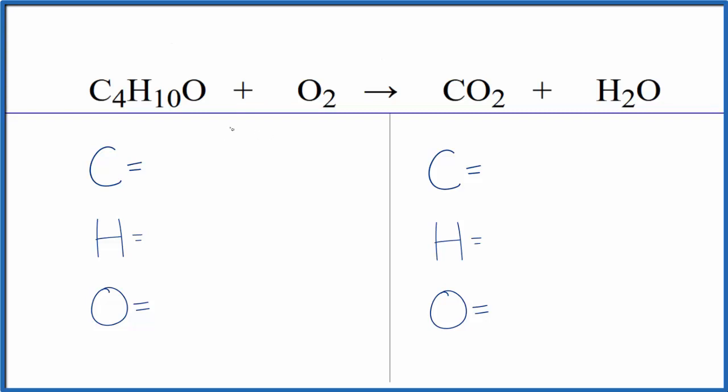We'll count the atoms up and balance. C4, we have 10 hydrogens, and we have one oxygen here, but be careful, we have these two here, so we have a total of three. On the product side we have one carbon, then we have two hydrogens, and then oxygens we have two plus one, so we have a total of three oxygen atoms.